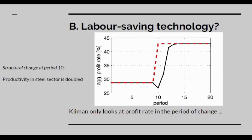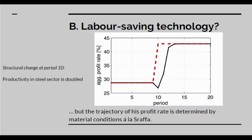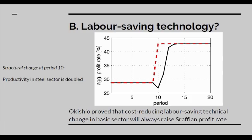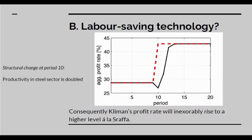If you follow his model through, it ends up with the same rate of profit as you get in the Sraffian model — it just takes four time steps to reach it. So he doesn't end up predicting any different long-term effect from the Sraffian model. Since the trajectory of the profit rate is determined by material conditions as in Sraffa, Okishio proved that cost-reducing labour-saving technical change in the basic sector will always raise the Sraffian profit rate. It will also raise the Kliman profit rate after a few time steps. He gives a misleading impression by only citing the first time period when it falls.